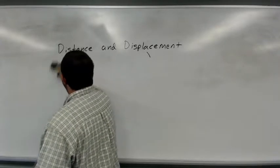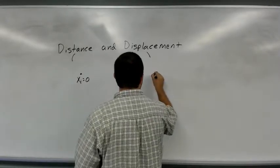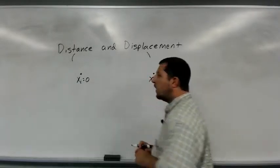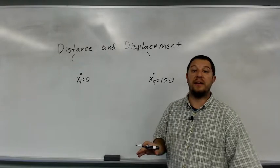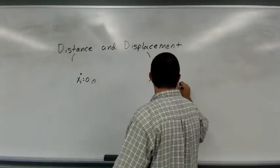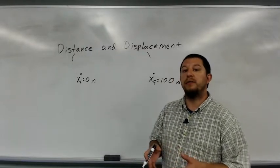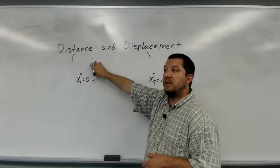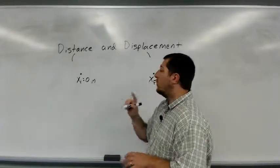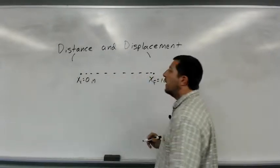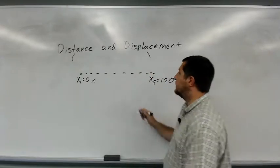Example one: let's say we have two positions — an initial position at zero and a final position at 100 meters. Let's say this is the 100-meter dash. What is the distance and what is the displacement? The distance is just the total path length of the trip, and the total path length was 100 meters, so the distance is 100 meters.